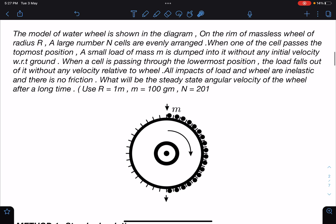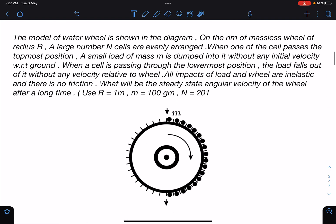Here is the problem statement. I have just modified that slightly but it is the same problem. The model of water wheel is shown in the diagram. On the rim of massless wheel of radius R, a large number N cells are evenly arranged. When one of the cell passes the topmost position, a small load of mass m is dumped into it without any initial velocity with respect to ground. This is one point we have to notice.